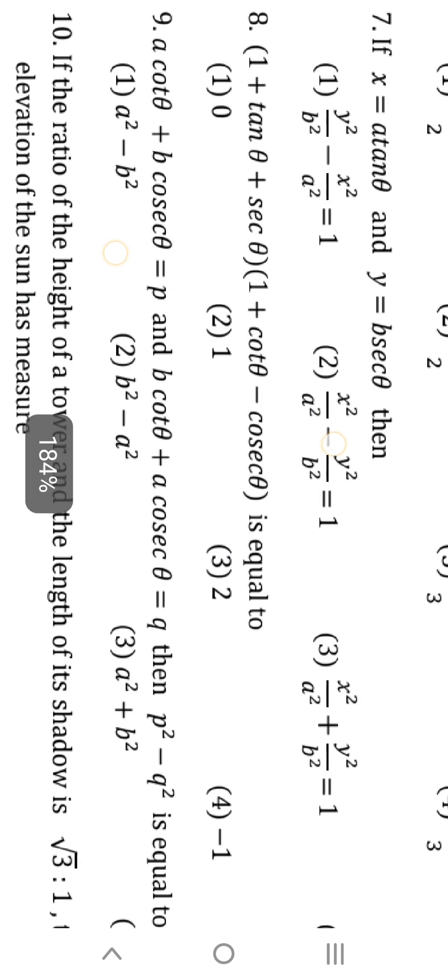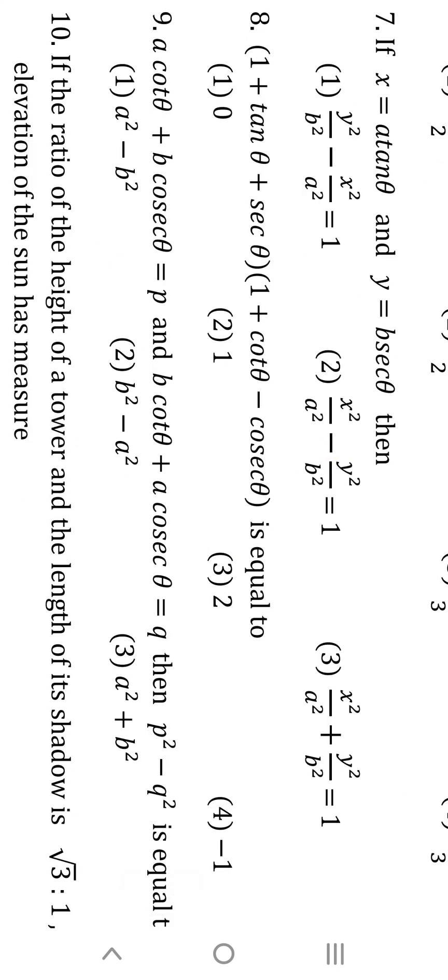Eighth question: (1 + tanθ + secθ)(1 + cosθ - cosecθ). Here two 1s are given: 1 plus 1 equals 2. The answer is 2.